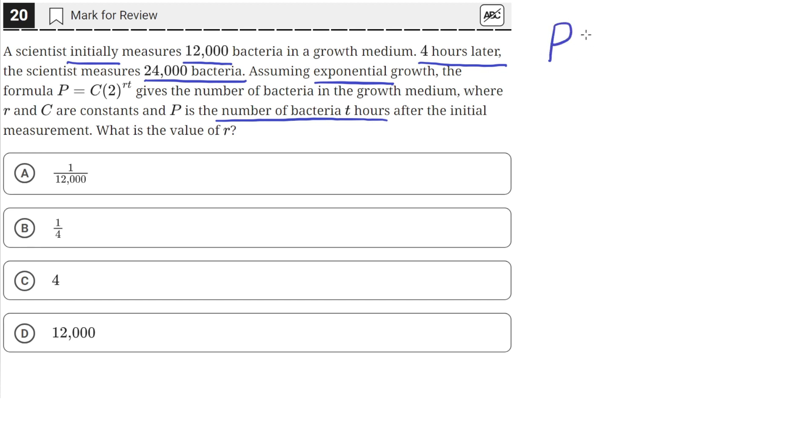We have this exponential growth equation that models this problem. We are given that the initial amount of bacteria in the medium is 12,000. So at time T equals zero, which is the initial condition, the initial population of the bacteria is 12,000. If we plug 12,000 in for P,